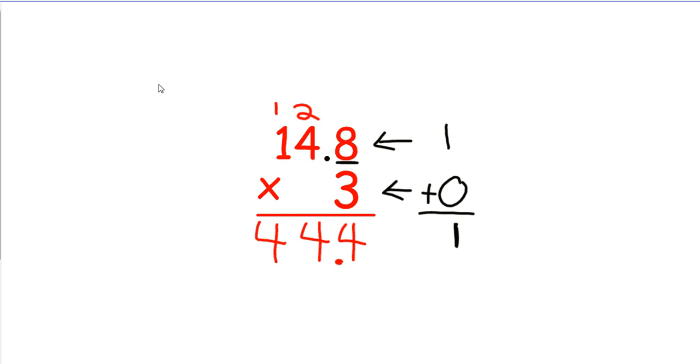Now, you could also use estimation to help you out. 14 and 8 tenths is about 15. And 15 times 3 is actually equal to 45. Is 45 pretty close to 44 and 4 tenths? Yes, it is. So, I know my answer is reasonable. That doesn't tell me I have the exact correct answer, but it does give me a good idea that I have a reasonable answer.